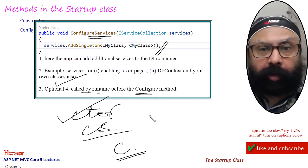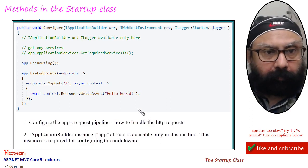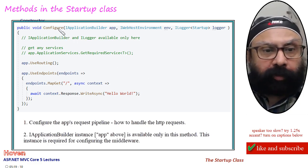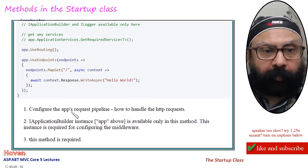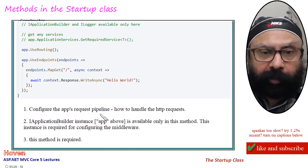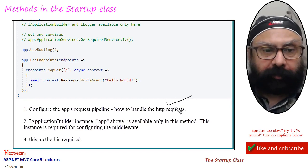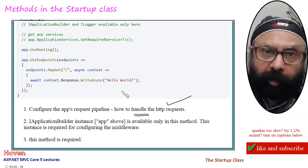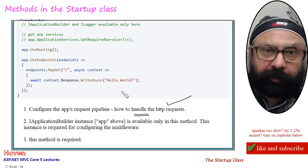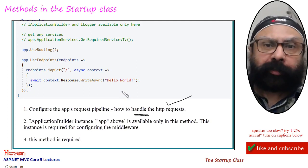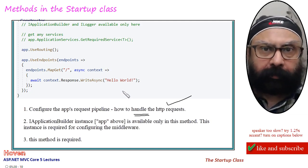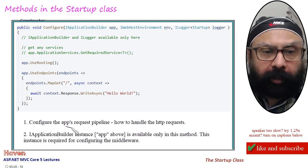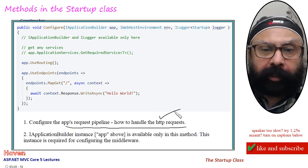Let us move to our third method called Configure. The purpose is to configure the app's request pipeline — how to handle the HTTP requests. So you added all the services in the ConfigureServices method, used the constructor to store important instances, and this Configure method allows you to configure the app's request pipeline to specify how you are going to handle the HTTP requests.